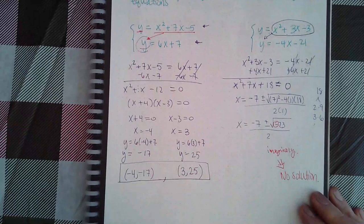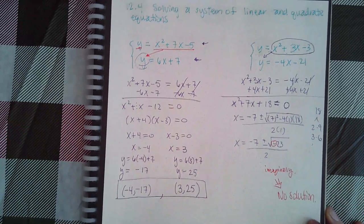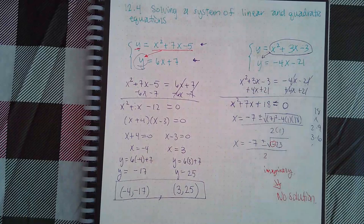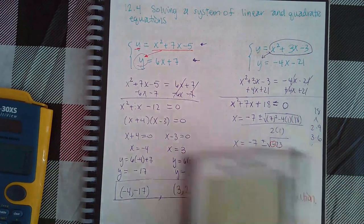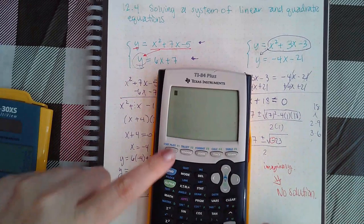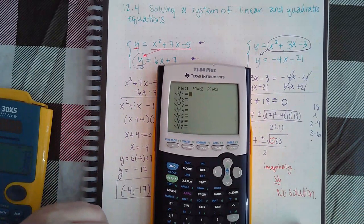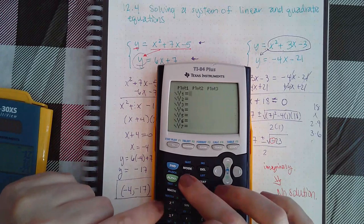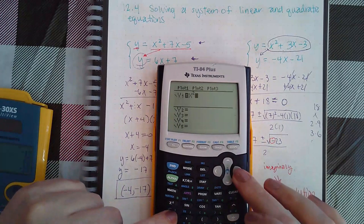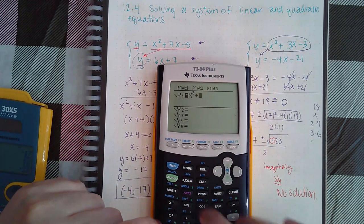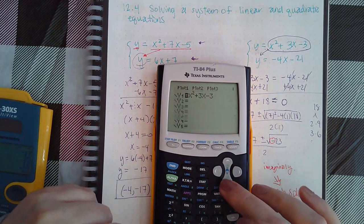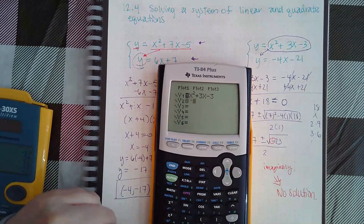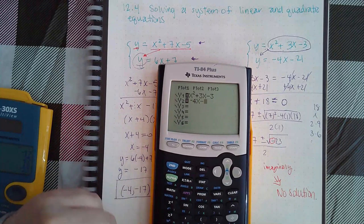You could verify on your own by graphing them. I'm going to cheat just because I don't want to spend too much time on this. I'm actually going to grab a graphing calculator real quick, even though I know you guys are not supposed to be using one, just so that you can see that they actually don't intersect. x²+3x-3 and my second equation is -4x-21.